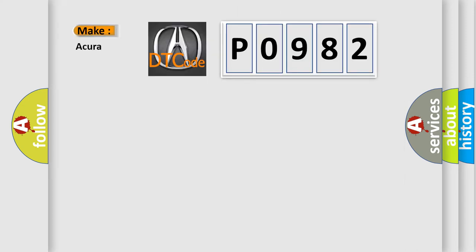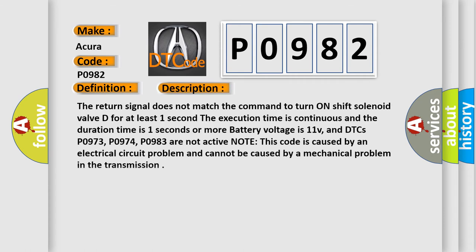So, what does the Diagnostic Trouble Code P0982 interpret specifically, Acura car manufacturers? The basic definition is short in shift solenoid valve D circuit. And now this is a short description of this DTC code.